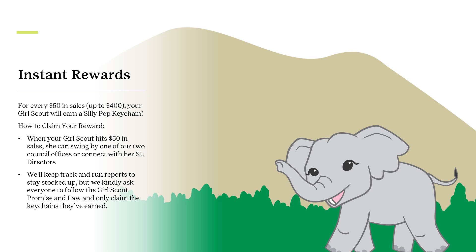We're thrilled to introduce a fun new twist to our fall product program with instant rewards. This program is all about adding excitement and instant gratification for our Girl Scouts as they rock their sales. For every $50 in sales, up to $400, your Girl Scout will earn a super cool Silly Pop keychain. The more she sells, the more keychains she can collect. Each keychain is a little mini celebration for reaching a milestone, making the sales journey even more fun.